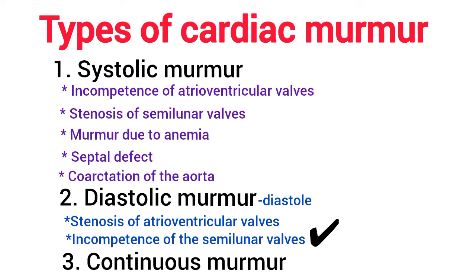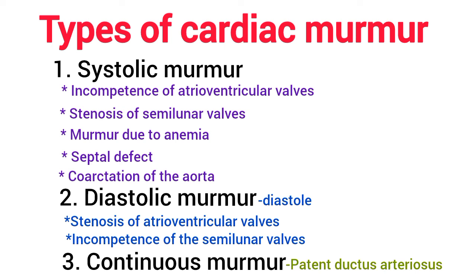Continuous murmur is a murmur heard in conditions such as patent ductus arteriosus. A continuous murmur is heard in this condition; however, the intensity of the sound is more during systole and less during diastole. Because of this, it is also called machinery murmur. It is a harsh blowing sound and is heard best in the pulmonary area.